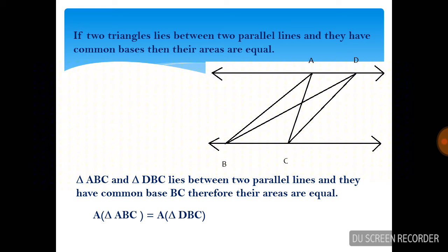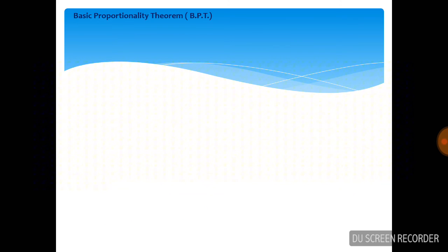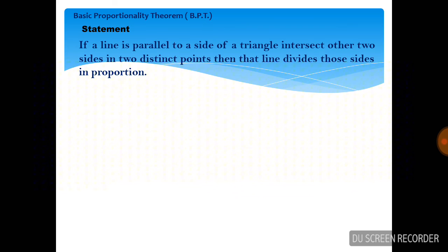Whatever we did in the first and second property, we have to apply for the theorem. The Basic Proportionality Theorem — in short, BPT. The statement is: if a line is parallel to a side of a triangle and intersects the other two sides in two distinct points, then that line divides those sides in proportion.